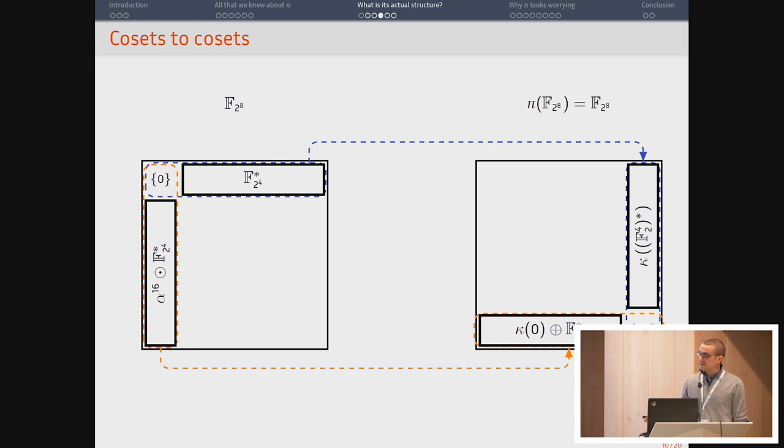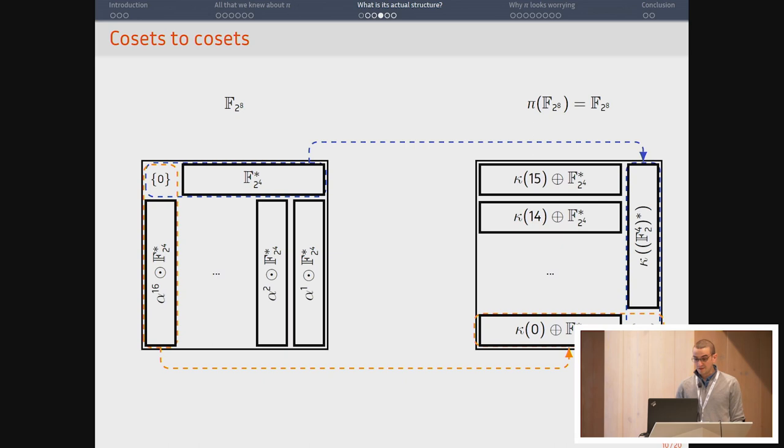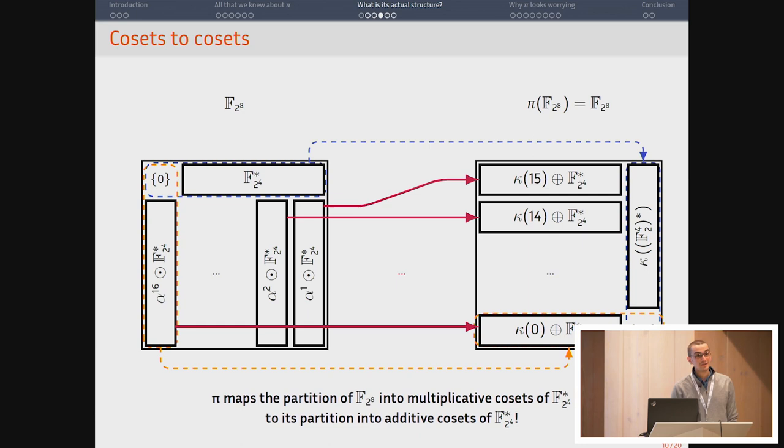So when I realized that, I banged my head on the wall and then worked further. And then I realized that this other vector space in the input was a multiplicative coset of the subfield. And in the output, you had something which was indirect sum with the subfield. And when you look at the other multiplicative cosets of the subfield and the additive cosets of the subfield in the output, pi maps one to the other. So pi maps the partition of the field into its multiplicative cosets of the subfield to its partition into additive cosets of the subfield.